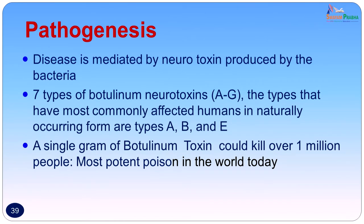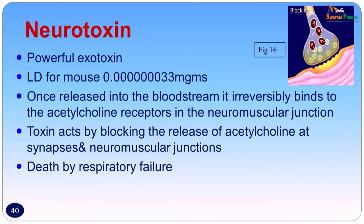The disease is mediated by neurotoxin produced by Clostridium botulinum. Seven types of botulinum neurotoxins exist — A through G, with C having two subtypes C1 and C2. The types most commonly infecting humans are A, B, and E — therefore the polyvalent antisera contains antibodies to these three types. A single gram of botulinum toxin could kill over 1 million people — it is the most potent poison in the world, more powerful than strychnine or rattlesnake venom. The lethal dose for a mouse is 0.0033 milligrams. Once released into the bloodstream it irreversibly binds to acetylcholine receptors at the neuromuscular junction, blocking the release of acetylcholine. Death is by respiratory failure.